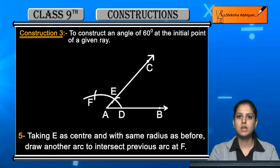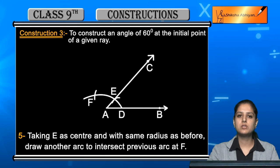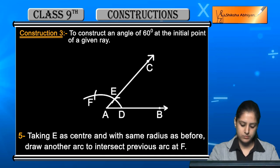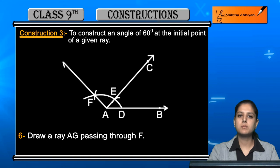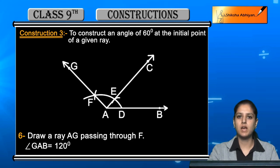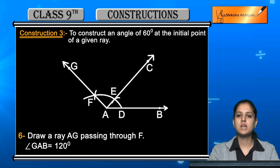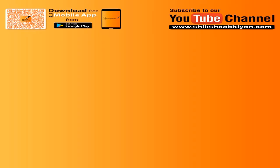अब आपके पास तीन arcs बन गई हैं — एक D पर, एक E पर, और तीसरी F पर। E वाली arc से आपका 60 degree वाला angle pass हो रहा है, और F वाली arc से आप एक और ray draw करेंगे। Draw ray AG passing through F — एक ray AG बनानी है जो F से pass हो। यह जो angle GAB बना है, this is the complete 120 degree angle। इस construction में हमने दो angles बनाना सीखा — 60 degree और 120 degree।